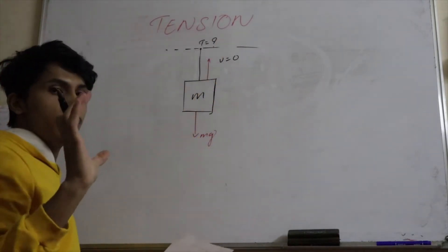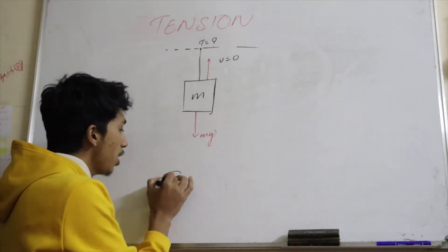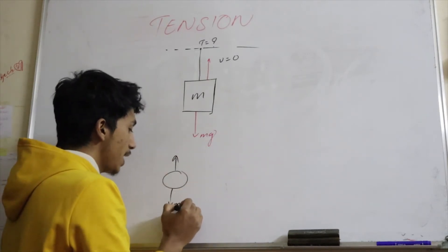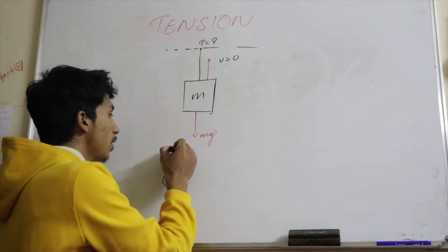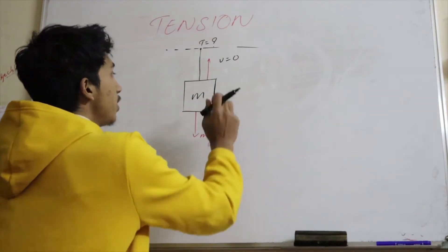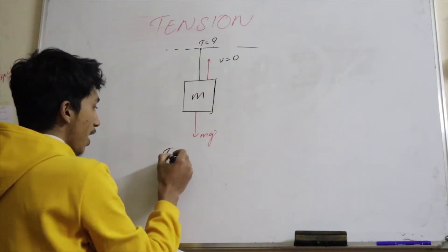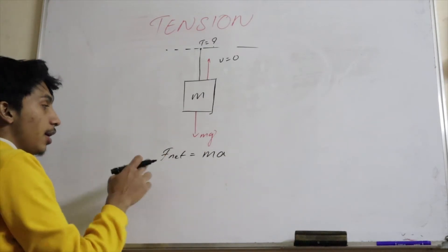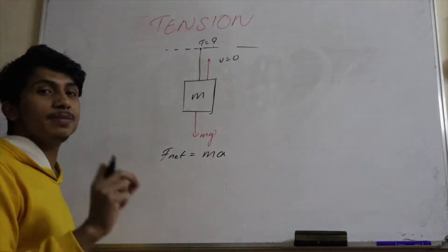In Newton's third law, one object has equal and opposite reaction — this side has a force and this side has the opposite reaction. These are equal and opposite reactions. So how do we calculate the tension in this condition when the velocity is zero? As we know, F_net equals ma.